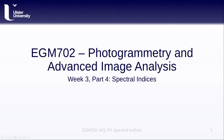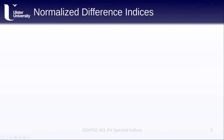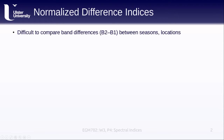Hello and welcome to EGM 702, week 3, part 4: Spectral Indices. In the previous lesson we talked about doing band arithmetic with different satellite image bands and discussed some of the drawbacks of those different band arithmetics.